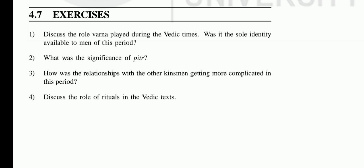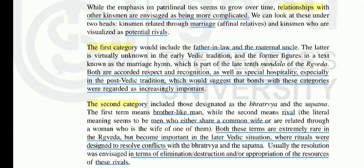The concept of Pitr is about the relationship between father and son - who will be the son. Now, let's move to the next question: how was the relationship with other kinsmen getting more complicated in this period? We learned about the father-son relationship which was very important, but other relationships were complicated. The patrilineal descent was growing in importance over time. There were basically two categories: the first was relationships through marriage, and the second was relationships with potential rivals and enemies.